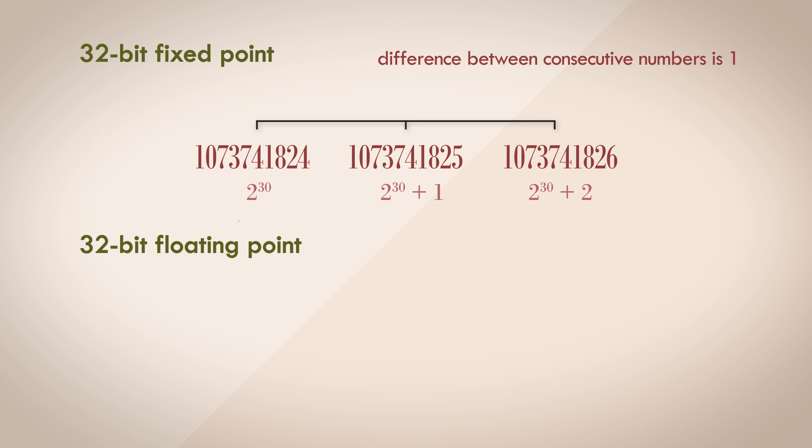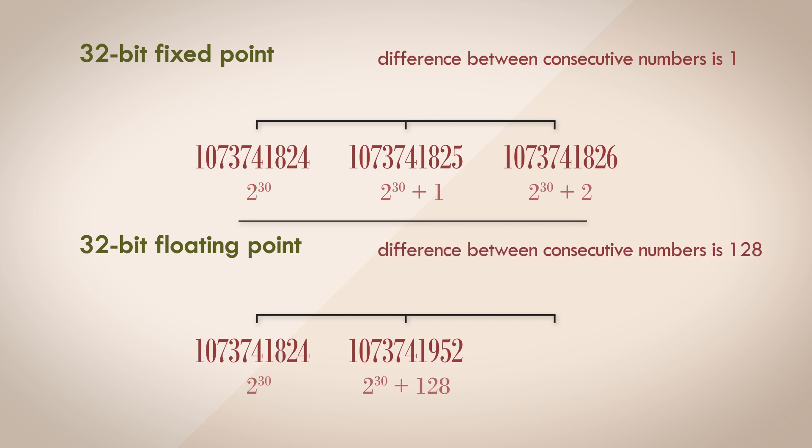What about in floating point though? The next possible representable value in floating point format is this. It's 2 to the power of 30 plus 128. The least count is 128. Numbers in between are unrepresentable. That's a massive loss in precision, wouldn't you agree?